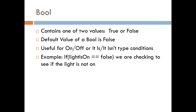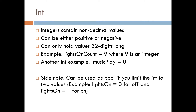Let's start off with a bool. A bool contains one of two values: true or false. The default value of a bool is false. This is useful for anything that's like on and off — it is this or it isn't this. A good example: if 'light is on' equals false, we are checking to see if the light is not on. You can also use it in other cases — 'is the bear dead?' being a boolean variable name, with false meaning it's alive and true meaning it's dead.